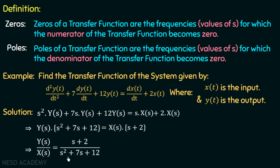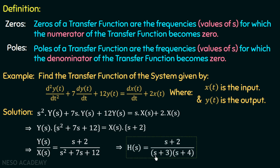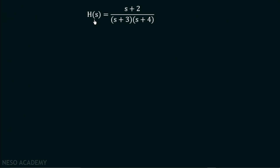If we factorize the denominator, we get the transfer function equal to (s + 2) divided by (s + 3)(s + 4). And this is the transfer function for this system. So our transfer function is H(s) = (s + 2) / [(s + 3)(s + 4)].